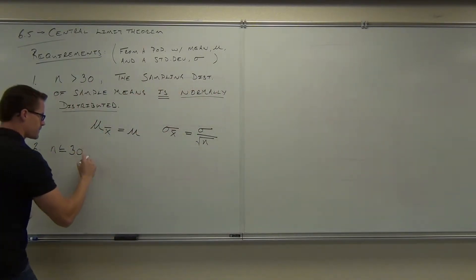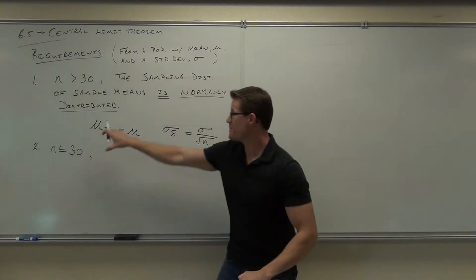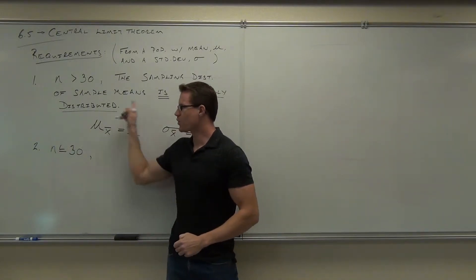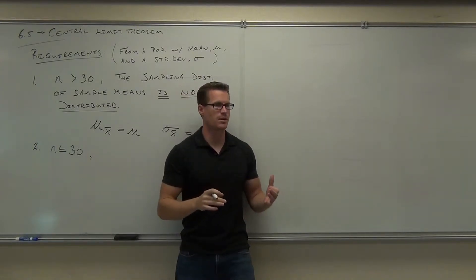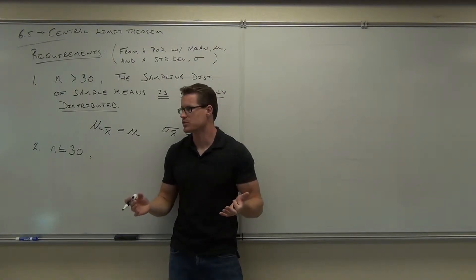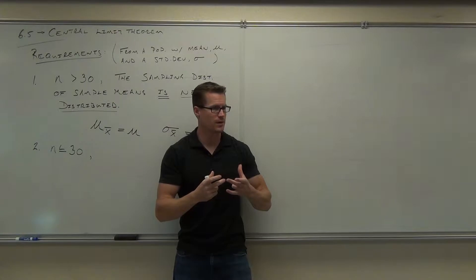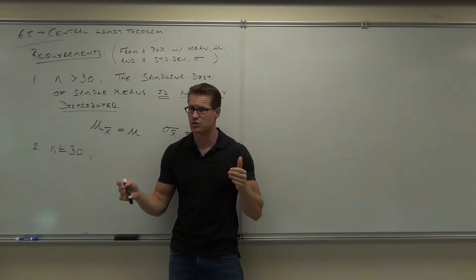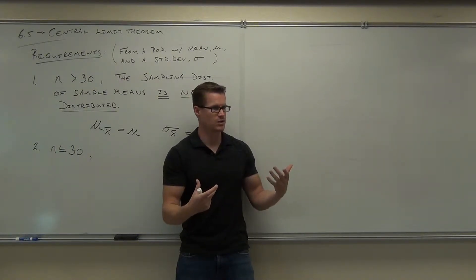Now, if I tell you this, I've got to say something about the population to make this stuff work. If your sample size is less than 30, your sample has to come from a population that is normally distributed. It's got to be normally distributed. If you're sampling from a normal distribution, the sampling distribution of sample means will still be normally distributed.